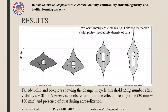This graph shows the viability of Staphylococcus aureus — a violin and box plot showing the change in cycle threshold number after viability qPCR regarding the effect of resting time and presence of dust during aerosolization. Samples aerosolized with dust had generally lower cycle threshold numbers, indicating greater viability. The presence of dust had a significant effect on the cycle threshold number, whereas resting time had no significant effect on the viability of Staphylococcus aureus.